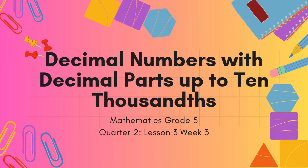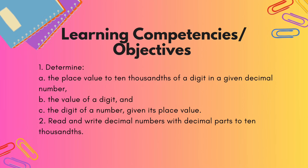Hi and hello to all our math buddies, numbers smarts, and talino kids who are with us for this video. Welcome to our new lesson for Mathematics Grade 5. For quarter two, week three, we're going to discuss decimal numbers with decimal parts up to ten-thousandths. Our learning competencies are: determine the place value and value of a digit in a given decimal number, and read and write decimal numbers with decimal parts to ten-thousandths.